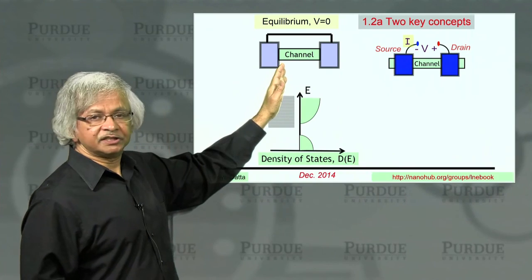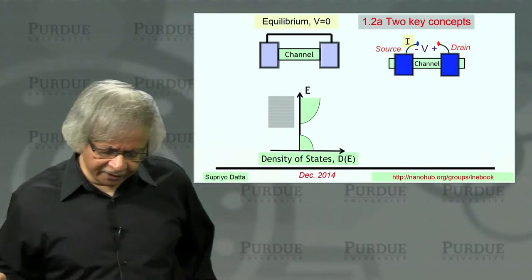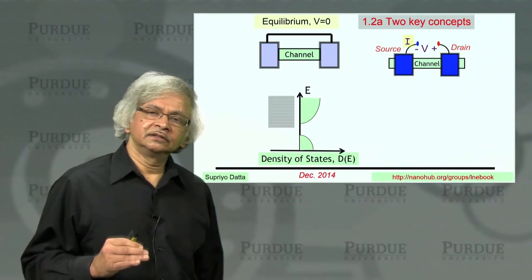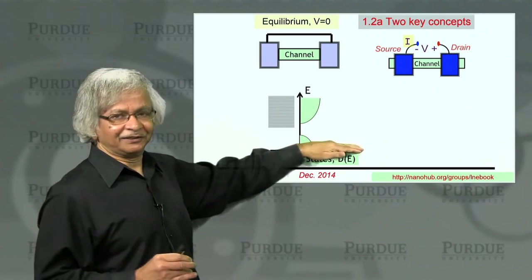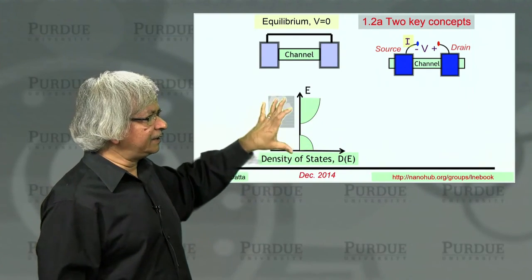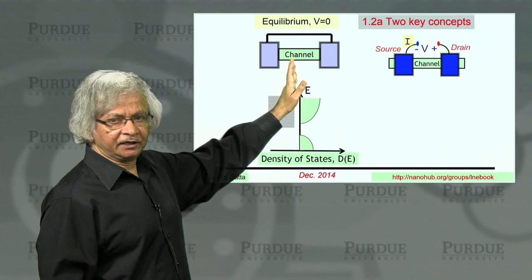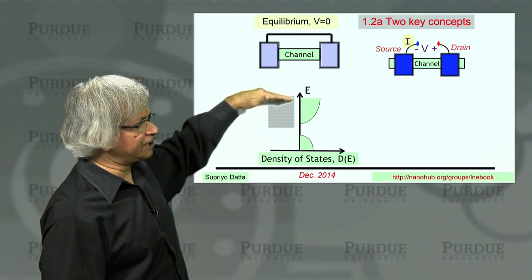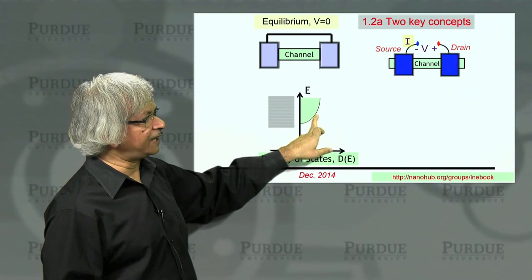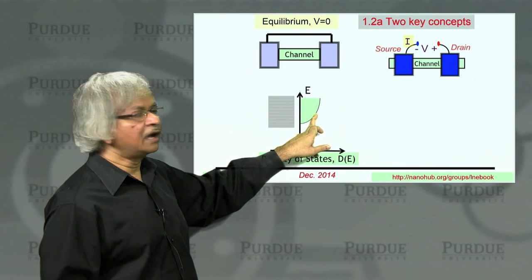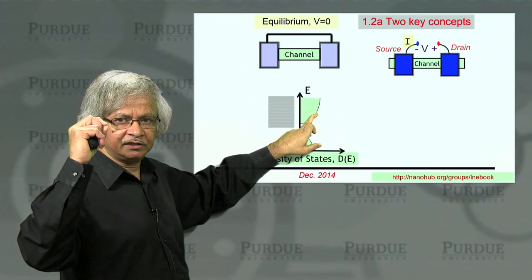So a typical density of states plot might look something like this. This axis is energy. And this takes a little getting used to because usually you plot the independent variable horizontally, but here it's convenient to draw the energy axis vertically because that's the way we draw the energy levels. And what the density of states tells me is how many of these energy levels I have per unit energy in there.